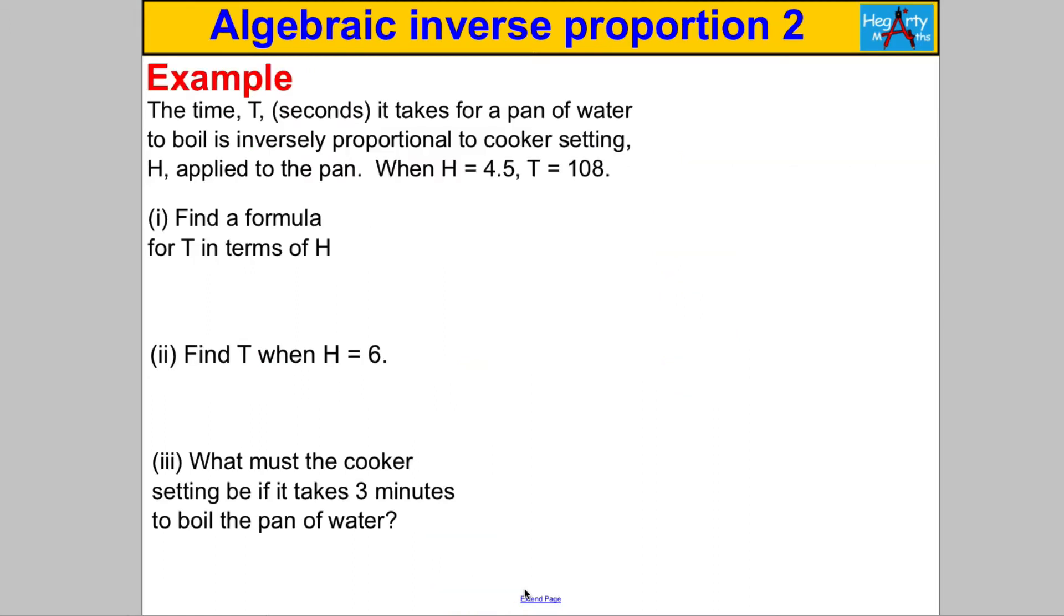Pause the video and have a go at this if you can. You've got to read these questions really carefully. The time in seconds it takes for a pan of water to boil is inversely proportional to the cooker setting, which is called H, applied to the pan, and it gives you some initial conditions that H is equal to 4.5 when T is 108.